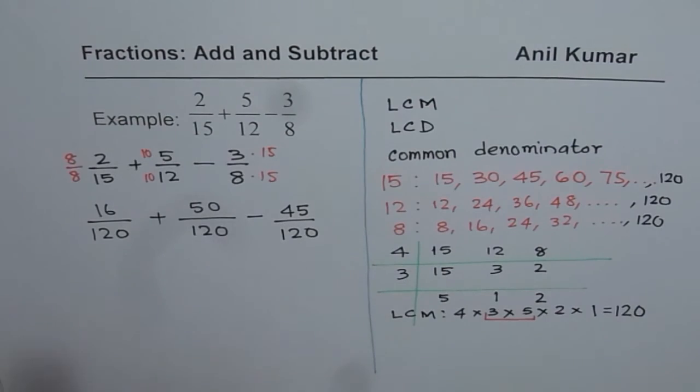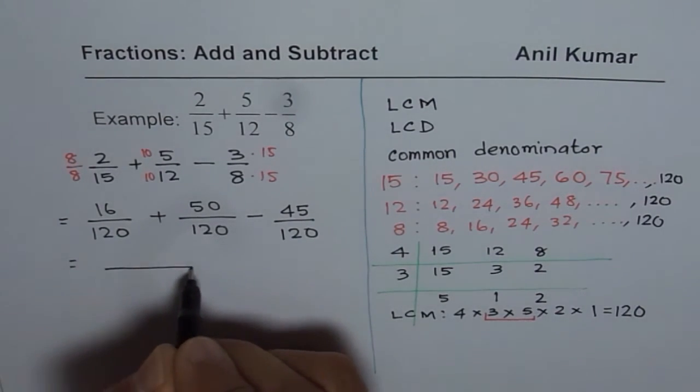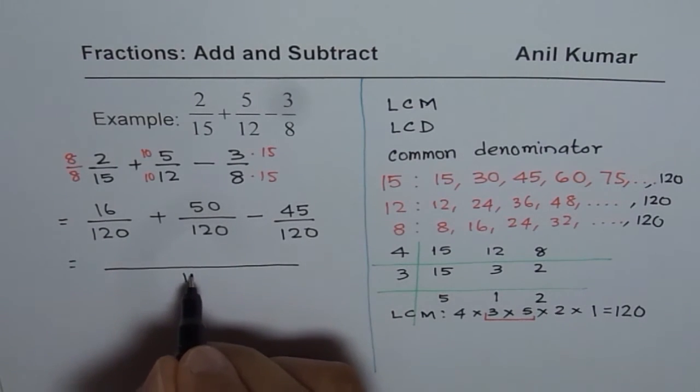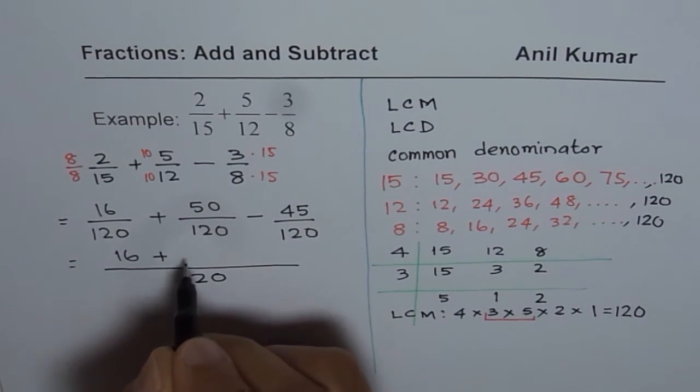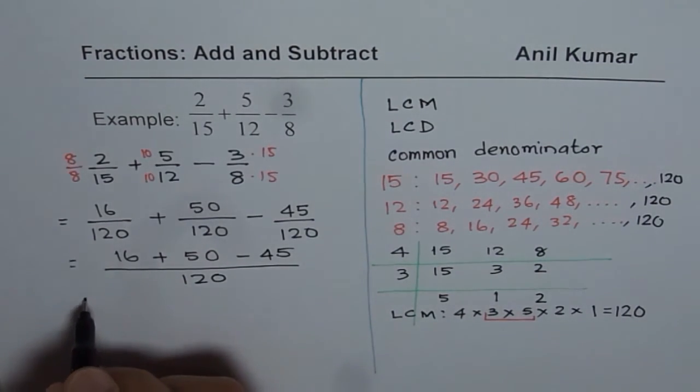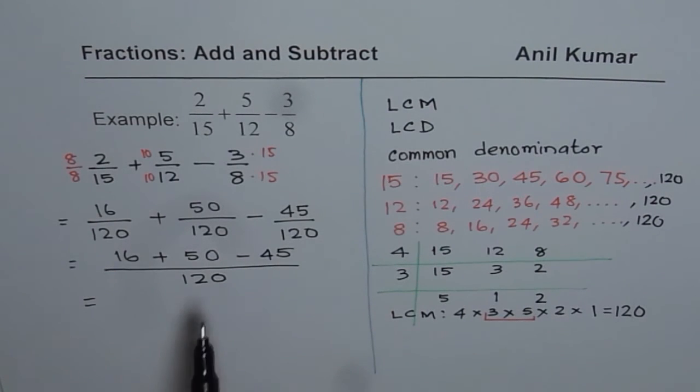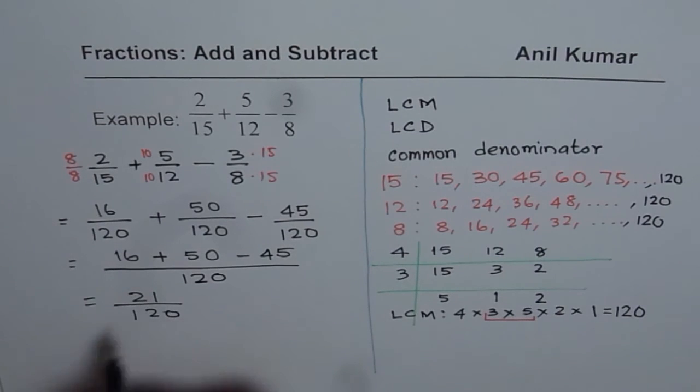We will use that 45 value and that is 120. That is the common denominator. At times we also prefer to write like this. Common denominator means is common to all. So we could write like this. And then we do our simple addition and then subtraction. Now, that gives you the answer. At times you could do 50 minus 45 is 5. So adding 5 to 16 is 21. So we get 21 over 120.